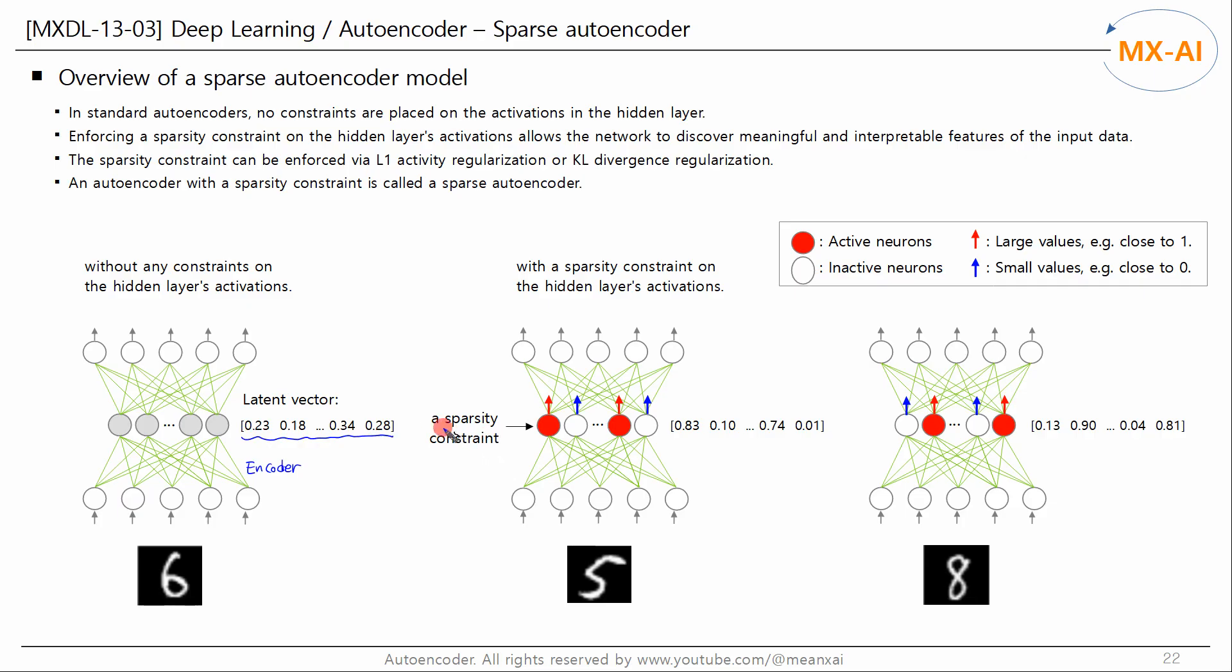However, enforcing a sparsity constraint on the hidden layer's activations allows the network to discover meaningful and interpretable features of the input data.